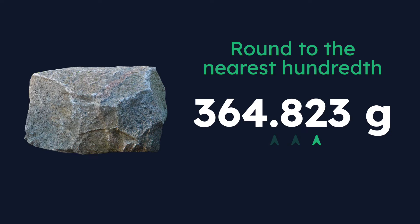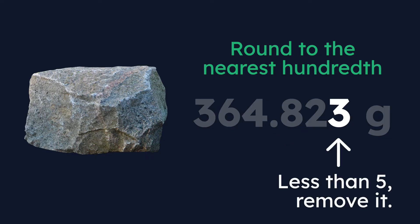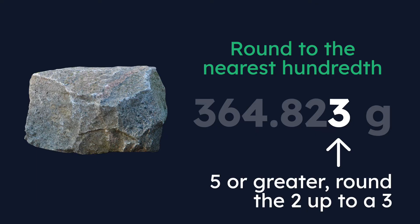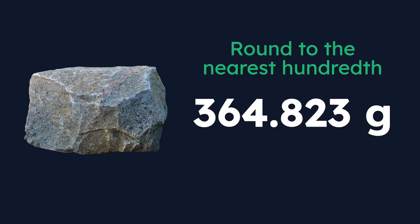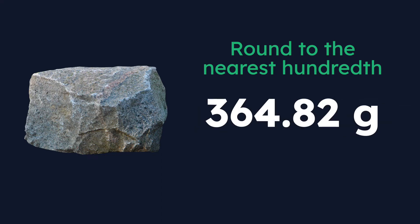In order to figure out what that final number looks like, we have to look at the next digit — in this case, the three. The rule is simple: if that digit is less than five, you can remove it altogether and you are done. If the number is five or greater, you look to the previous digit and round it up. So in this case, the three is less than five, so we round down — we just remove it altogether. Here's our final answer rounded to the nearest hundredth: 364.82 grams.